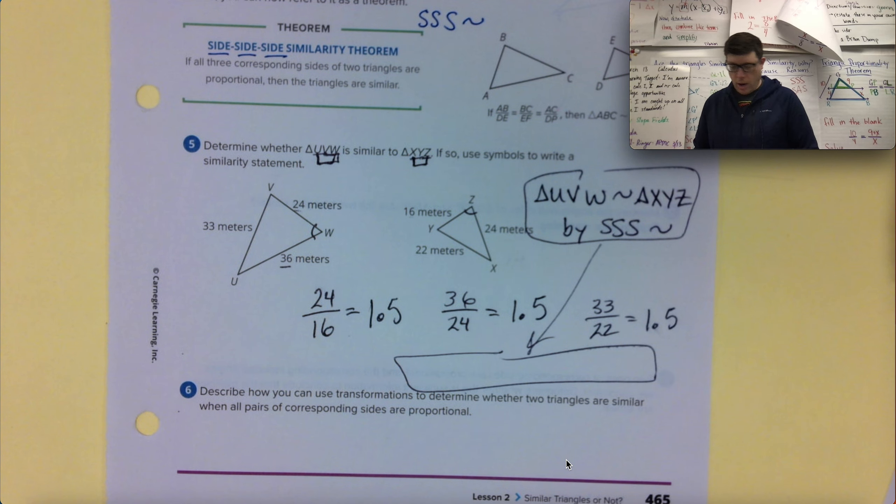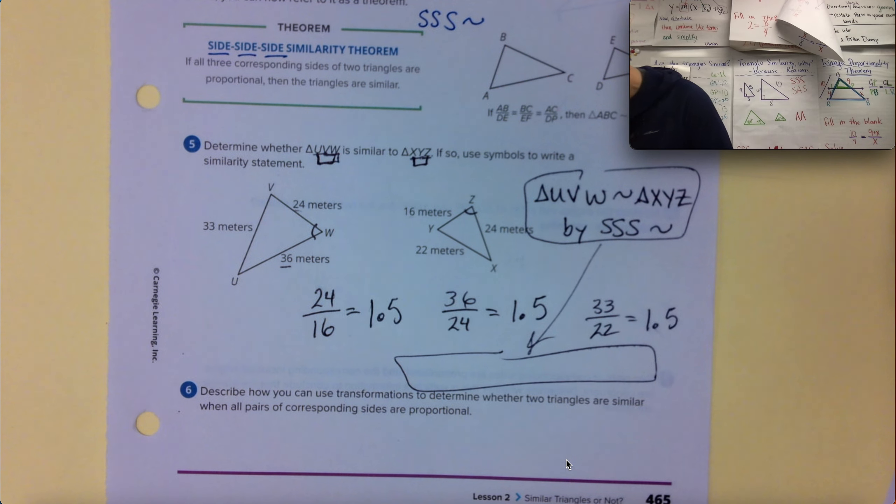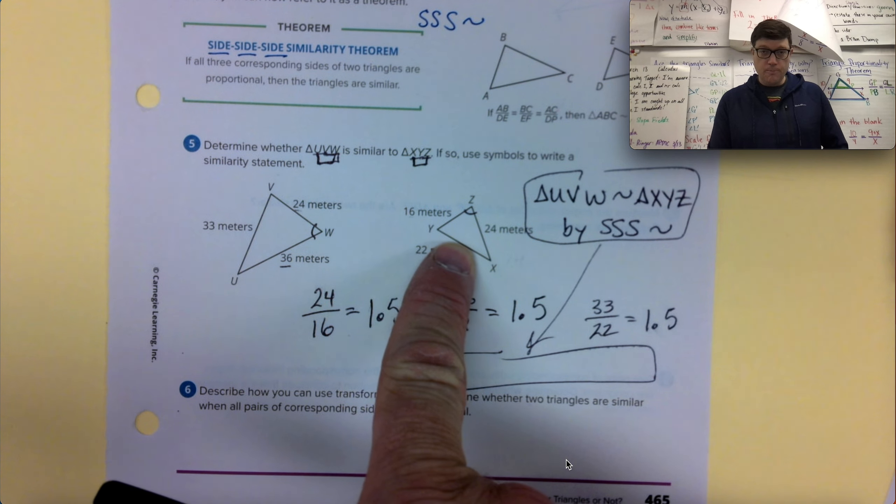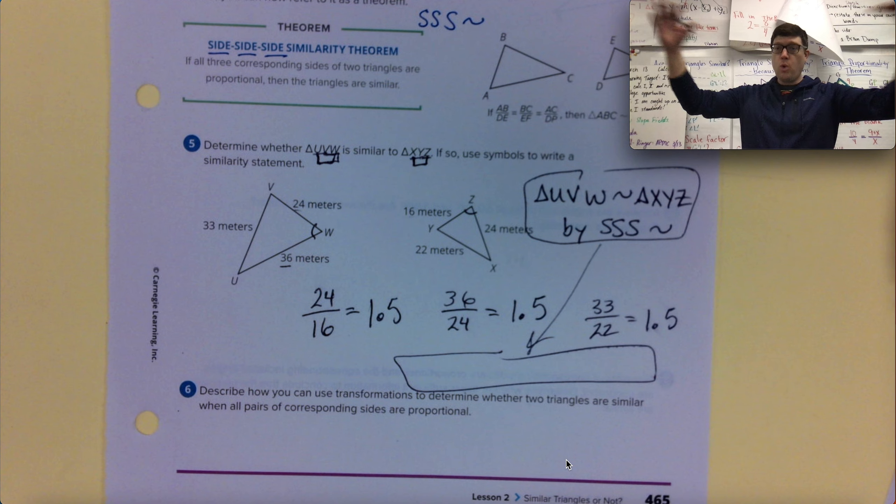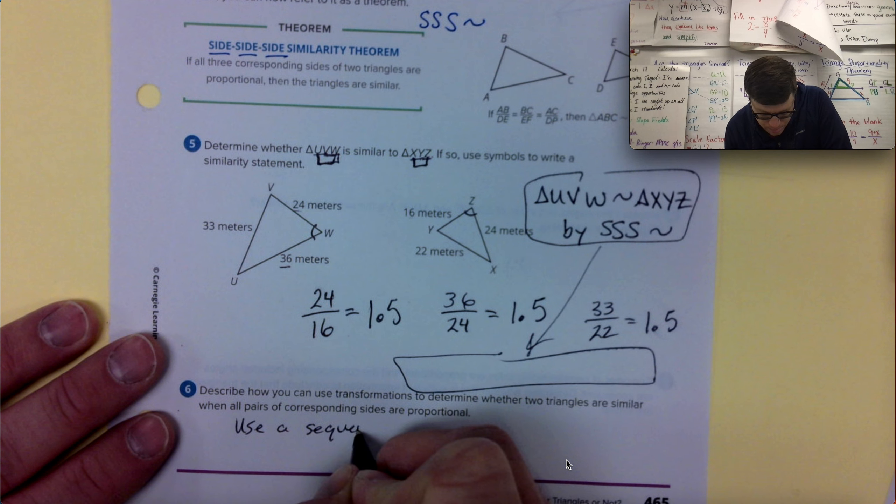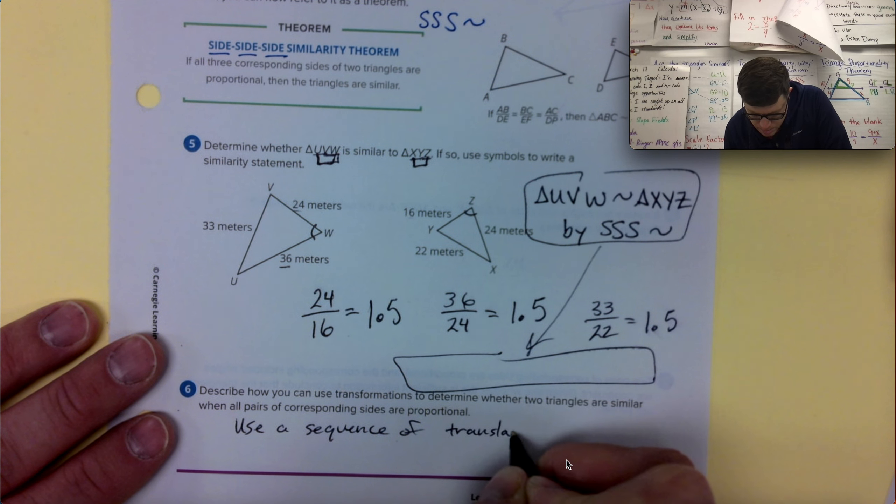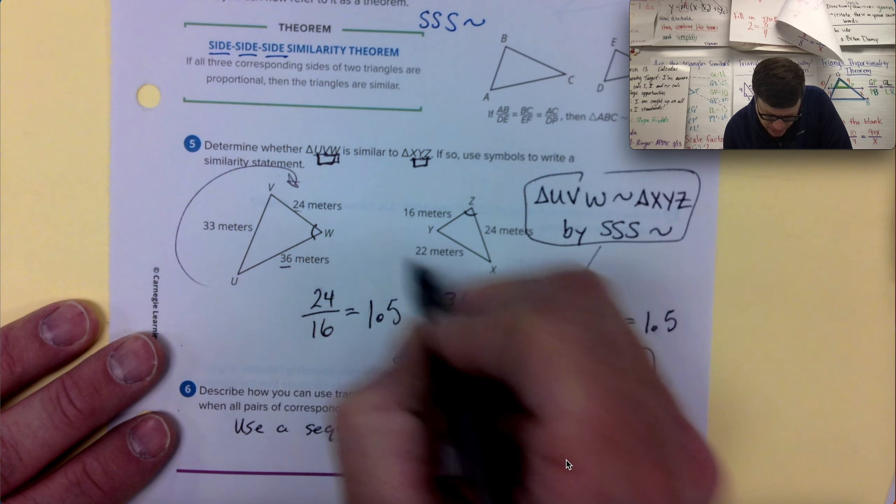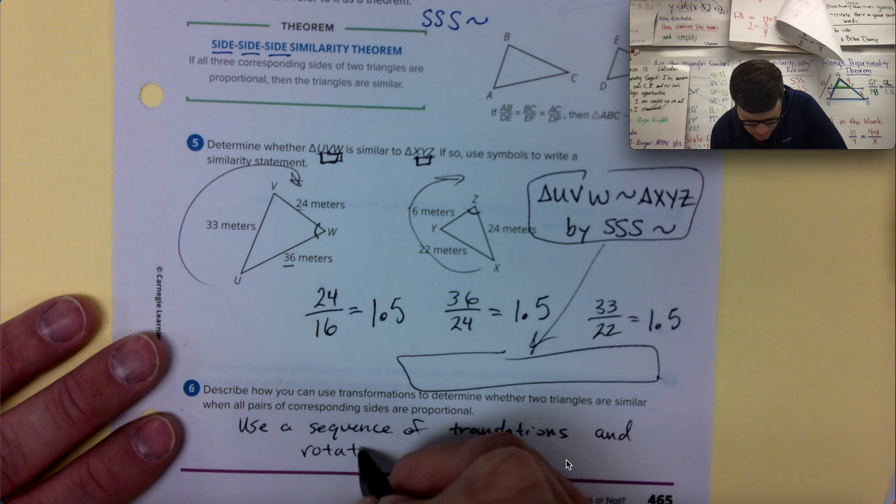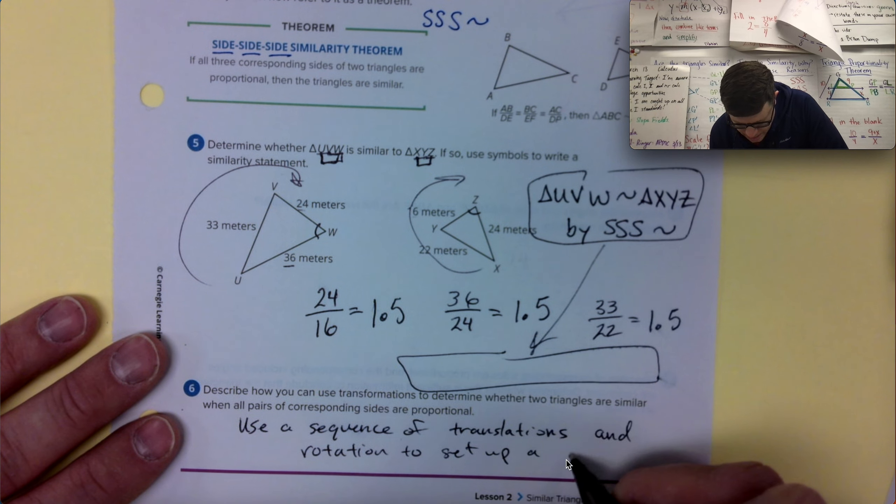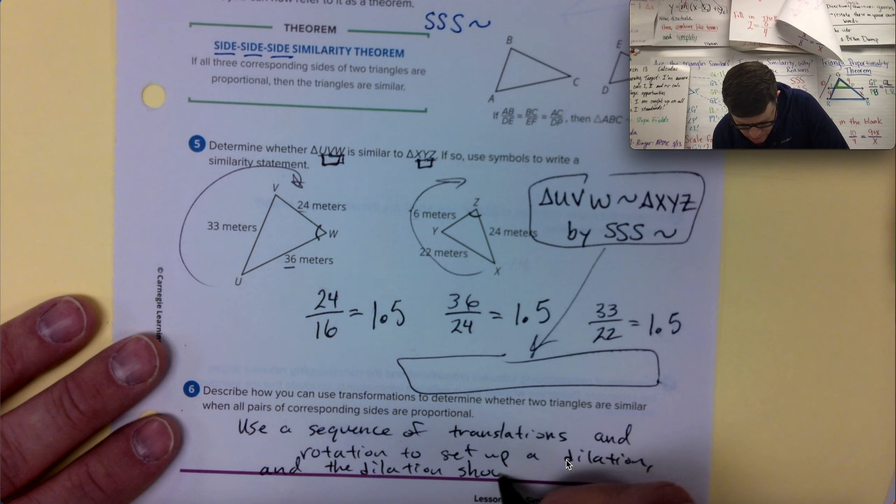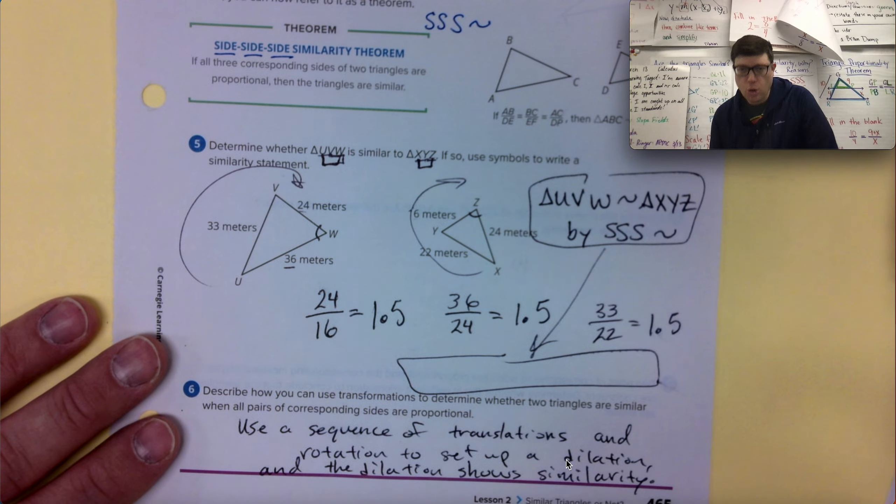Describe how you can use transformations to determine whether the two triangles are similar when all pairs of corresponding sides are proportional. You know, honestly, if you were to use a translation and then a rotation, you could set this small triangle so that it's in a way that a dilation would show us that the small triangle can dilate to the big triangle. So I'd say in a sequence or use a sequence of translations. Let's see, it goes UVW, so it's going around like that. And then XYZ is also going around like that. So I don't need to do a reflection. I had to think about, do I have to flip it? And I don't think I need to flip it. I just need a translation and rotation to set up a dilation and the dilation shows similar. Ooh, similarity is a better word. Boom. Done. Roasted.